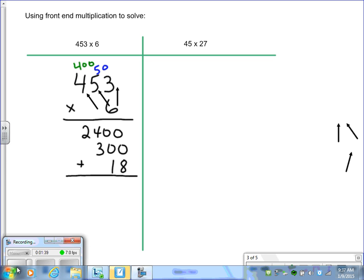We would take those products and add them together to get our final product, that 453 times 6 equals 2,718.